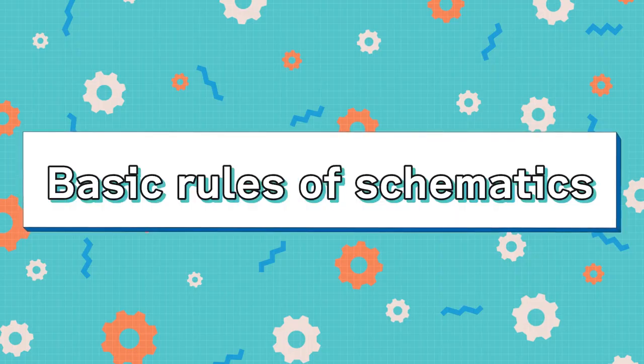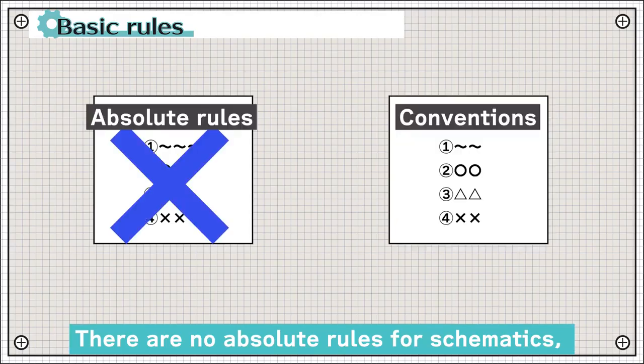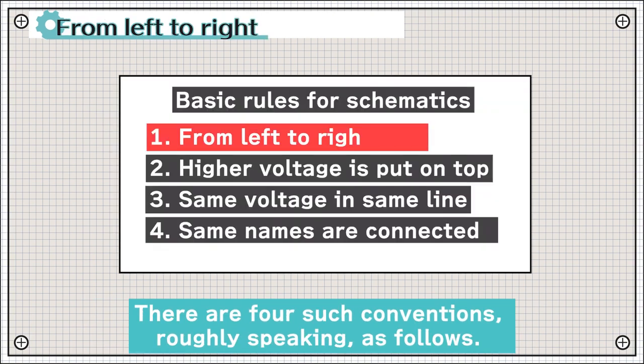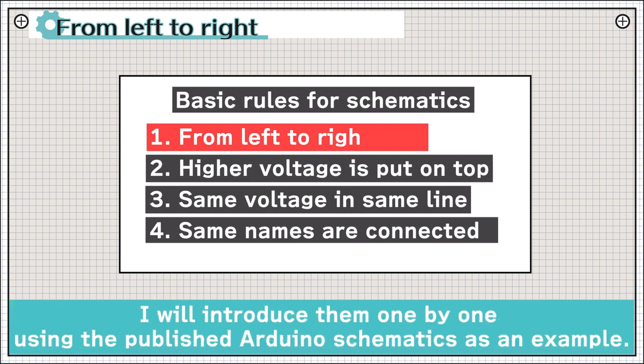First, I'll choose the basic rules of schematics that you should at least know. There are no absolute rules for schematics, but there are some conventions that should be easy to read for everyone. There are four such conventions, roughly speaking, as follows. I will introduce them one by one using the published Arduino schematics as an example.